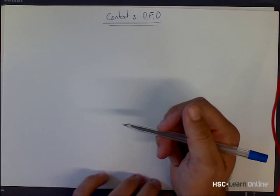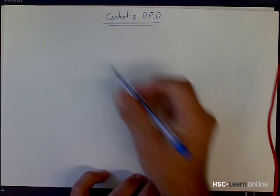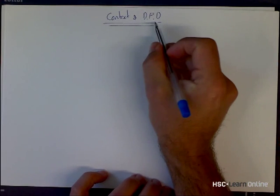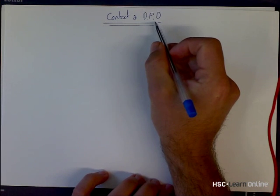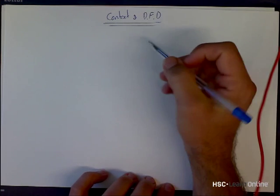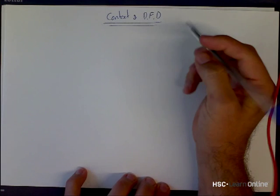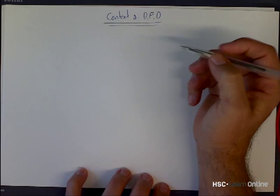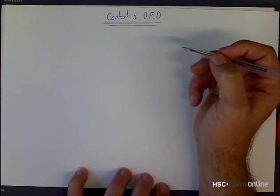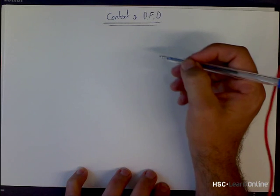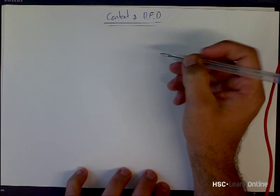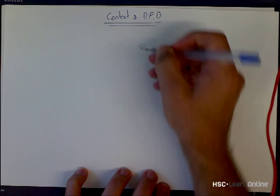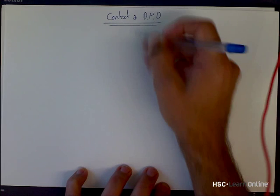This is a short video about context diagrams and data flow diagrams and how they relate to one another. I'm going to give you an example of an ATM software program and show you how we do this in terms of these two diagrams.